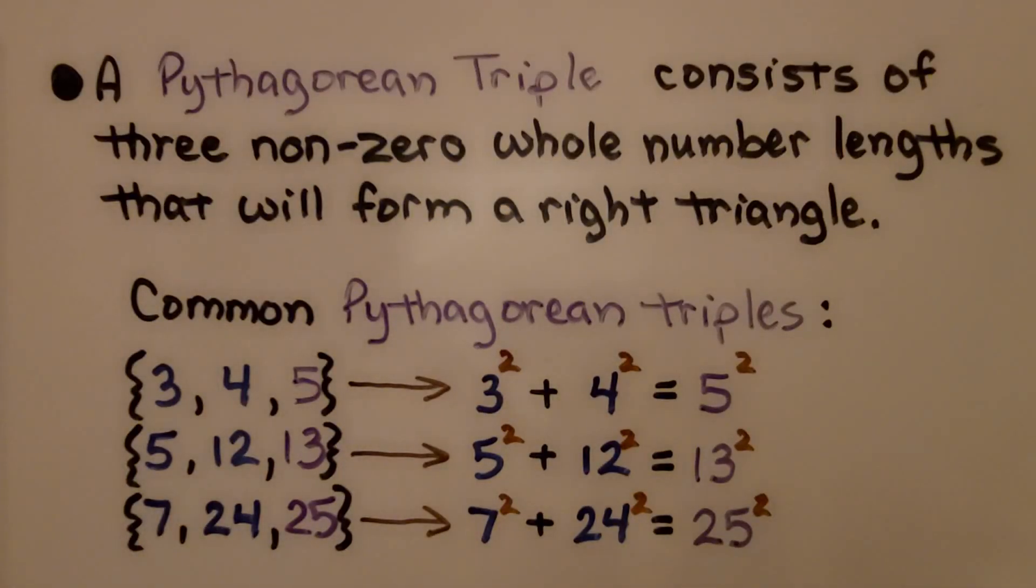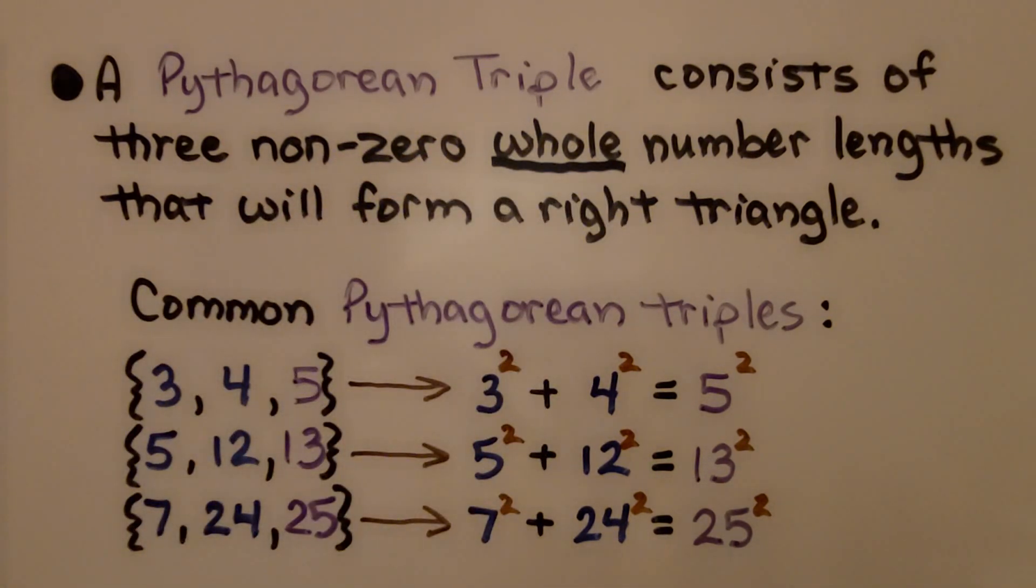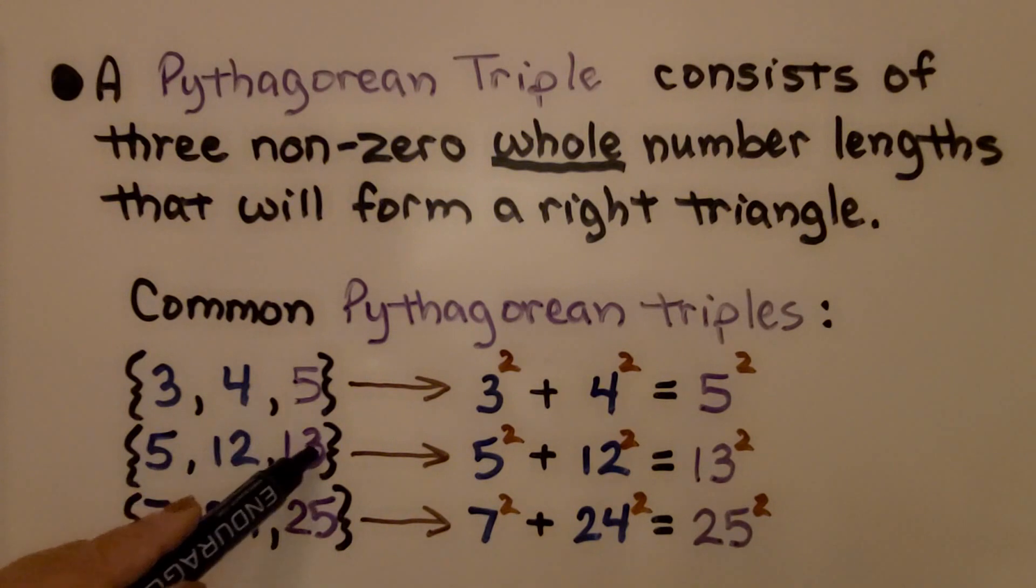A Pythagorean triple consists of 3 non-zero whole number lengths that will form a right triangle. And some common Pythagorean triples are 3, 4, 5, 5, 12, and 13, and 7, 24, 25.